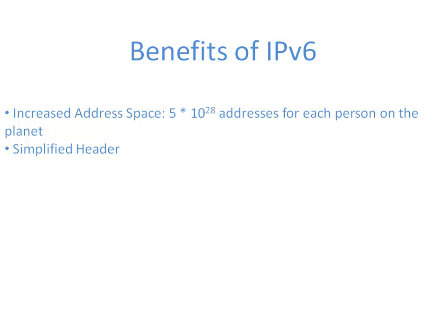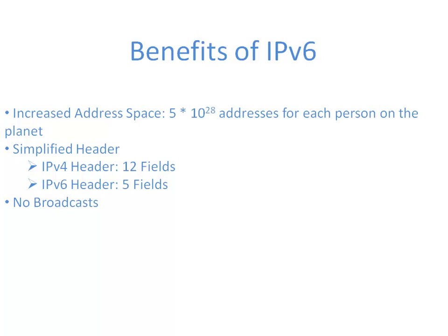IPv6 is also more simplified when you look at the header compared to an IPv4 header. An IPv4 header has 12 fields; an IPv6 header only has 5 fields. Also, we get rid of broadcasts with IPv6. With IPv4, a broadcast is sent out to all devices on a subnet within a broadcast domain or VLAN, and all devices receive it and have to look at that frame even if it's not destined for them — taking processing away from all devices on the subnet. There are no broadcasts with IPv6; there's something called an Anycast we'll discuss shortly.